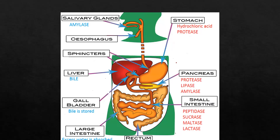Looking at enzymes in our body: in the buccal cavity or mouth, amylase digests starch into maltose. In the stomach, the protease enzymes renin and pepsin are present. In the pancreatic juice, you have trypsin, amylase, and lipase. In the intestinal juice, you have erypsin, maltase, sucrase, lactase, lipase, and enterokinase. All of these enzymes act upon different substrates, and you will learn more about them in the digestive system chapter.